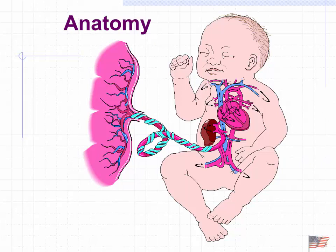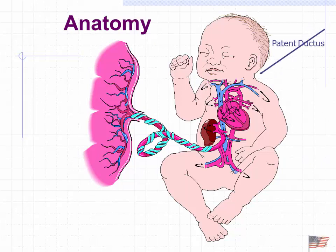Looking at our sites, we need to consider the pre-ductal versus post-ductal situation. The ductus arteriosus connects the aorta to the pulmonary artery somewhere around the left common carotid and left subclavian branching. So we want to take anything on the right side to use as a pre-ductal point.